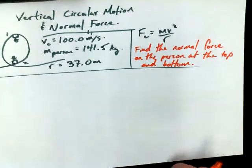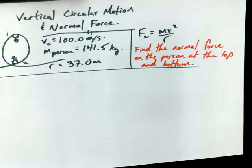And what we mean by that is, find the pressure on their butt, at the top and at the bottom. That's what the normal force is. It's that contact force between the bottom of the person, or the surface where the person touches the roller coaster. And in this case, your bottom, your physical bottom, your butt.